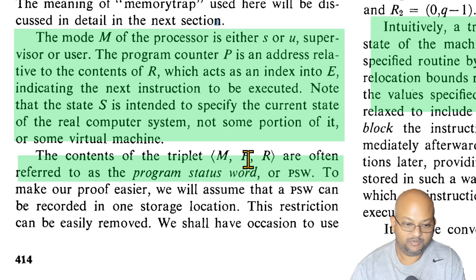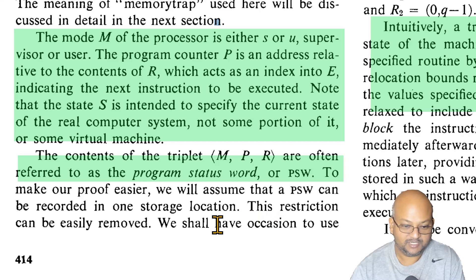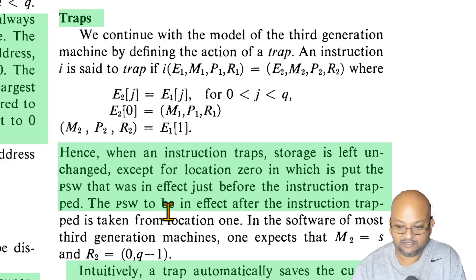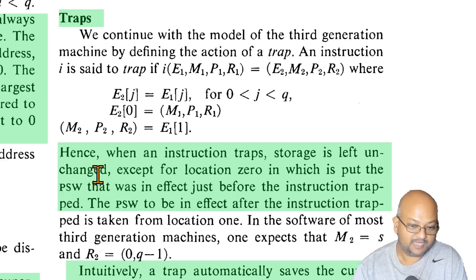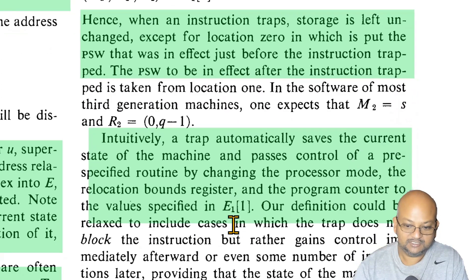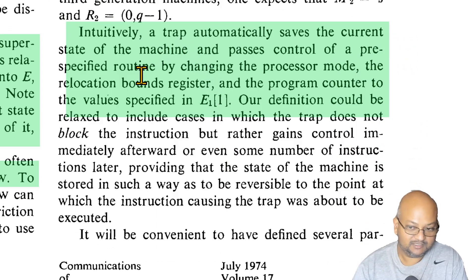This controls memory protection: if you try to access memory outside these bounds, that triggers a memory trap. The combination of mode, program counter, and relocation counter is referred to as the program status word — this is important because it lets you go back and forth between traps. When we trap, we save the program status word just before the trap, and all other storage is left unchanged. Intuitively, a trap saves the current state of the machine and passes control to the virtual machine monitor.